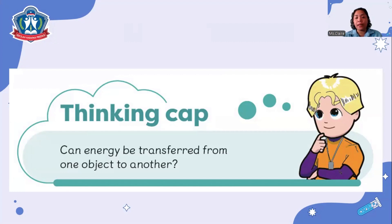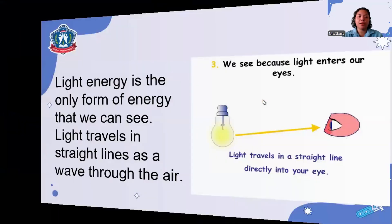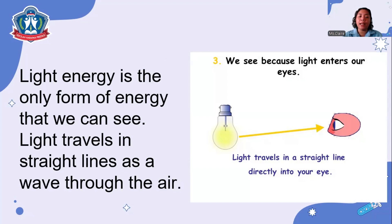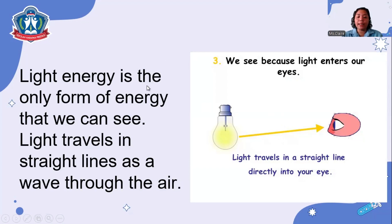Light energy is the only form of energy that we can see. As mentioned, light travels in a straight line as a wave through the air. We see because light enters our eyes — light travels in a straight line directly into our eyes.